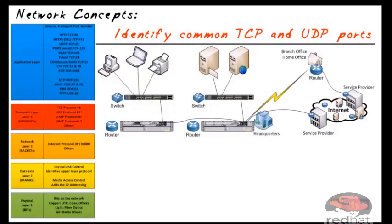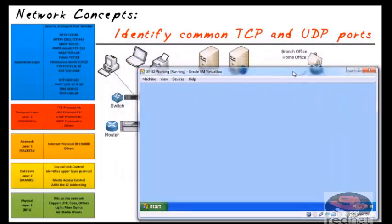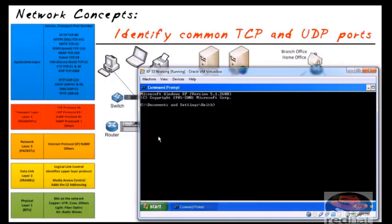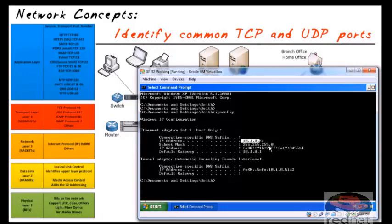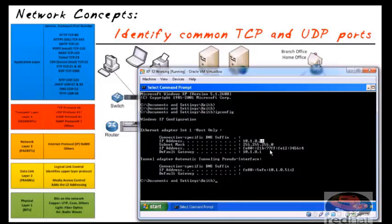I've got a PC here on our network. To verify its IP address on a Windows machine we use ipconfig. Sure enough, this is 10.1.0.51. We also know the first three octets are the network because of the subnet mask 255.255.255.0, meaning the first 24 bits are the network and the last octet is our host address. If you haven't been through the IP addressing nugget yet, go back and do that one first.